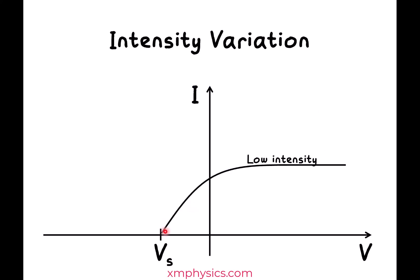On the IV graphs, it means that if this is the original IV graph, if you increase the intensity, you get a higher saturation current, meaning a higher rate of emission, but the stopping potential stays the same, which means the KE max is unchanged. What we expected was both a higher saturation current and a higher stopping potential. But very strangely, this was not observed. Instead, this was observed.